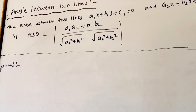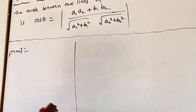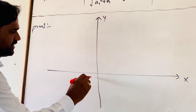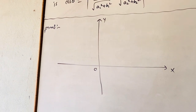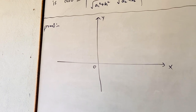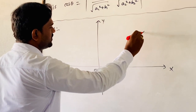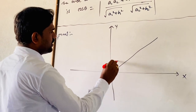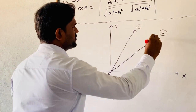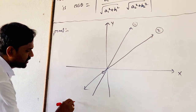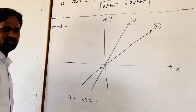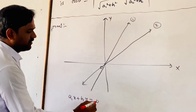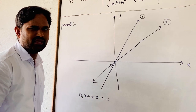We will find the derivation for this. Let us draw two coordinate axes which are mutually perpendicular — the x and y axes. Their intersection is known as the origin. Let us draw two straight lines passing through the origin. These are line 1 and line 2, represented by a1x + b1y = 0 and a2x + b2y = 0, which are in the form y = mx, meaning they pass through the origin.